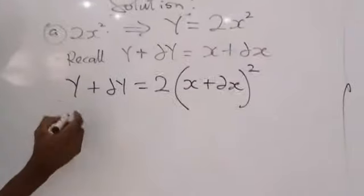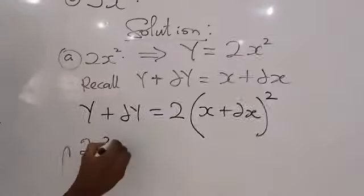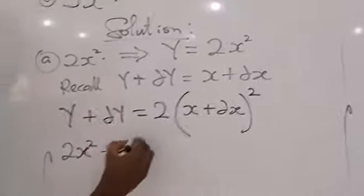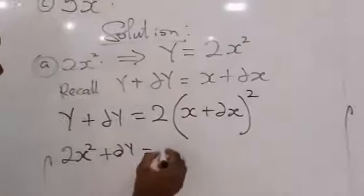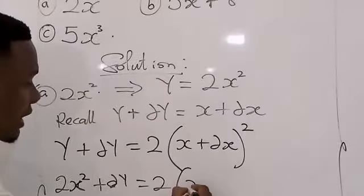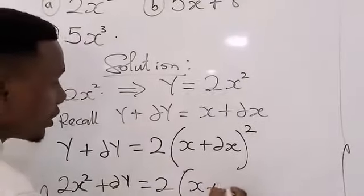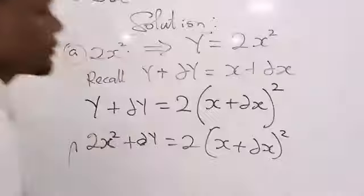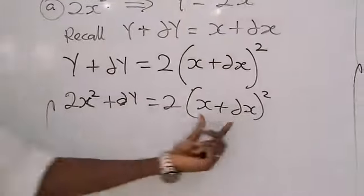Therefore, in place of Y, I am going to put 2X squared plus change in Y equal to 2 open bracket X plus change in X squared. When this is squared.